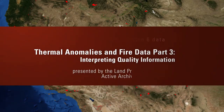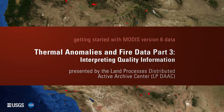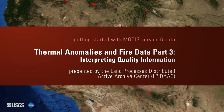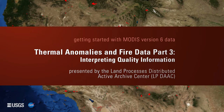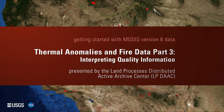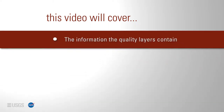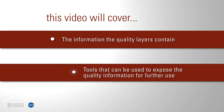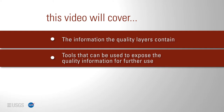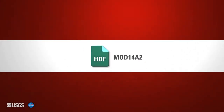Getting Started with MODIS Version 6 Thermal Anomalies and Fire Data, Part 3: Interpreting Quality Information, presented by the Land Processes Distributed Active Archive Center or LP DAAC. This is Part 3 of the Getting Started with MODIS Version 6 Thermal Anomalies and Fire Data video series. This video will cover the quality information associated with Thermal Anomalies and Fire Products, the information the quality layers contain, tools that can be used to expose the quality information for further use, and where to find more information on the LP DAAC website.